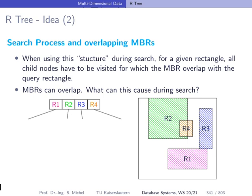Now if we go to see how we can search inside the R-Tree, it is in principle very simple. We have a query object like a query rectangle, and we look at all of these entries and go down the tree in the direction described by the rectangles that intersect with our query rectangle, or query point in general. For instance, we have a query object like this, and then we look at R1, R2, R3, and R4, and we decide in this case clearly that we have to go down the tree following the pointer for rectangle R1.